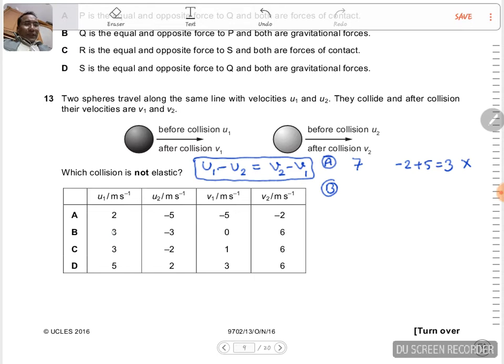If we go to case B, we have 3 minus negative 3, that's equal to 6. And here v2 minus v1, so v2 is 6 minus v1 that is 0, equals 6. So the two sides are equal, which means that this is elastic collision.